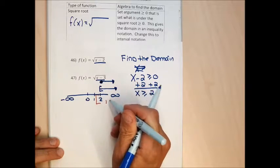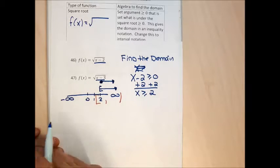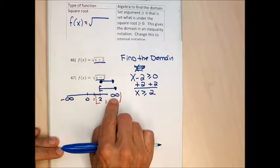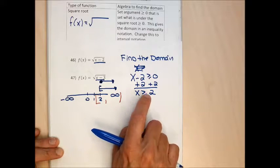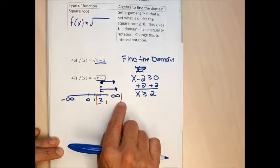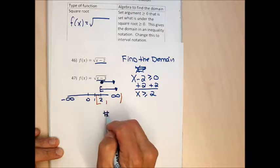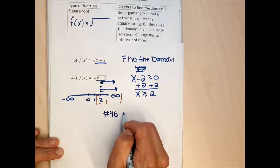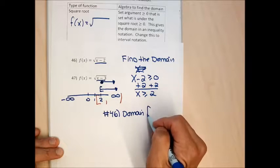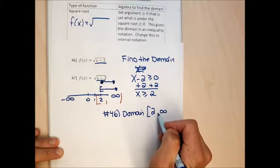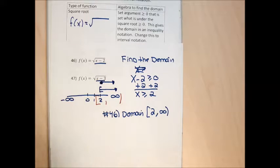The numbers needed for the interval are 2, the start of the domain, and positive infinity, the end. The 2 gets a square bracket because of the 'or equal to' in the solution. Infinities always get round brackets. So for number 46, the answer is the domain is [2, ∞) — square bracket on the 2, round bracket on infinity.